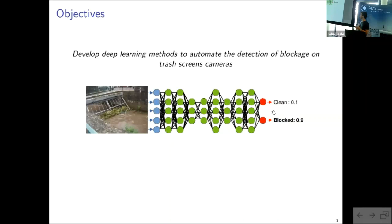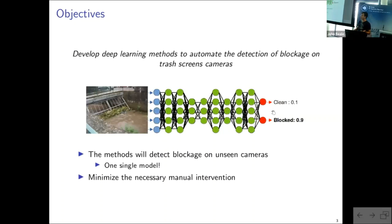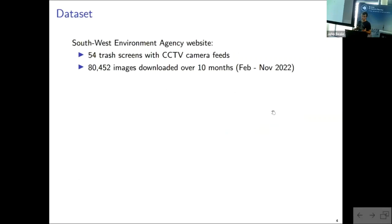So for example, here, using an image of a trash screen, use the deep learning model to try to estimate whether it is blocked. And so I added some additional constraints. So the method needs to detect the blockage on any new unseen camera. So I have one single model because we don't want one model per camera. As you can imagine, it would be very heavy and computing intensive. And we also want to minimize the manual intervention. So we don't want to have to label manual images for each new camera that we want to use.